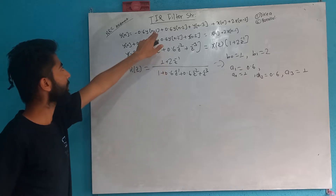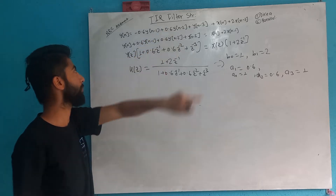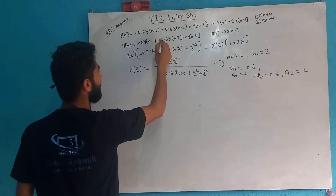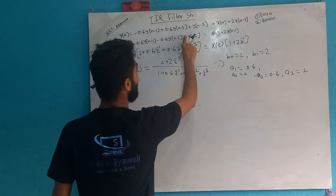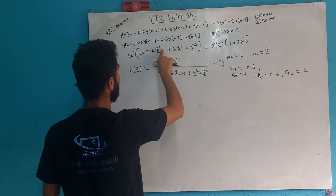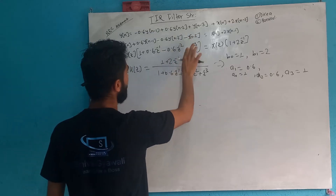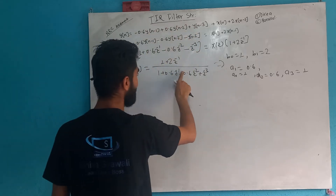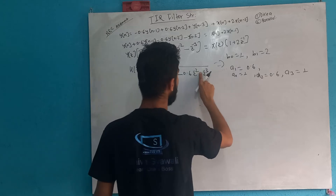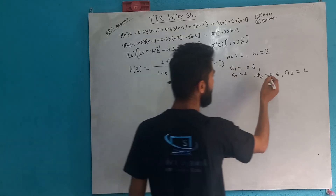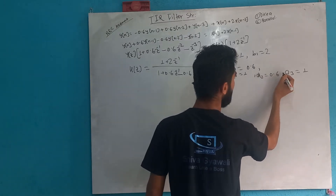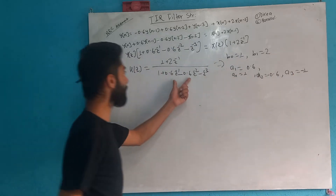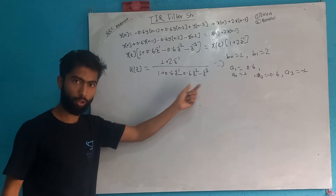So it is minus 0.6, and this is minus 1. I made a mistake here — I made the same mistake with the plus and minus signs. A2 value is 0.6 and minus 1. So this is the way I compare to this.